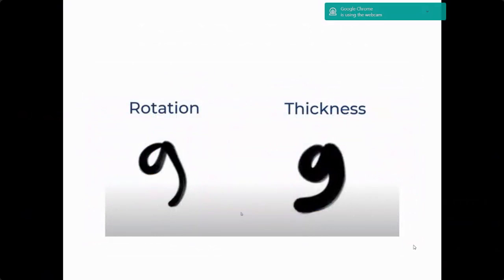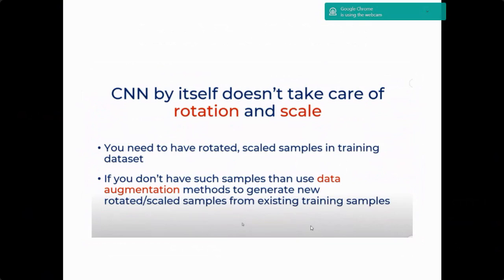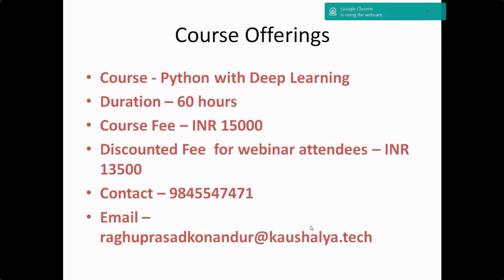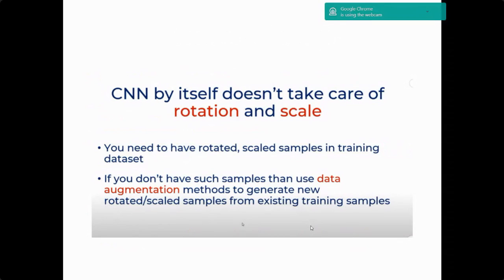However, CNN by itself does not handle rotation and scaling. If an image is rotated or the size changes, we need a separate technique called data augmentation — taking the training images and tilting them, rotating them, or transforming them, then including those in the training set so the model learns to classify rotated or scaled versions as well.